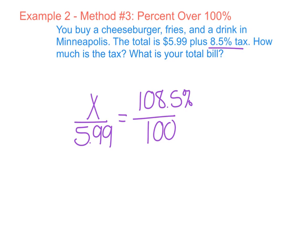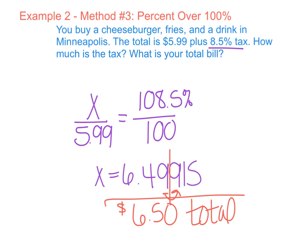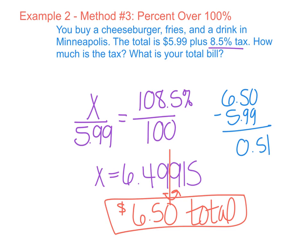So 108.5 times $5.99 divided by 100 gives us a grand total here of $6.49915. Again, we want to round to the nearest hundredth. So I'm looking here to the next digit and I see, yep, it's a 9 so I better round it up. And it becomes $6.50. This is my total amount, including my tax. So then to figure out just what my tax was, I would take my after tax total minus my total before my tax and I will find out that my tax was $0.51.